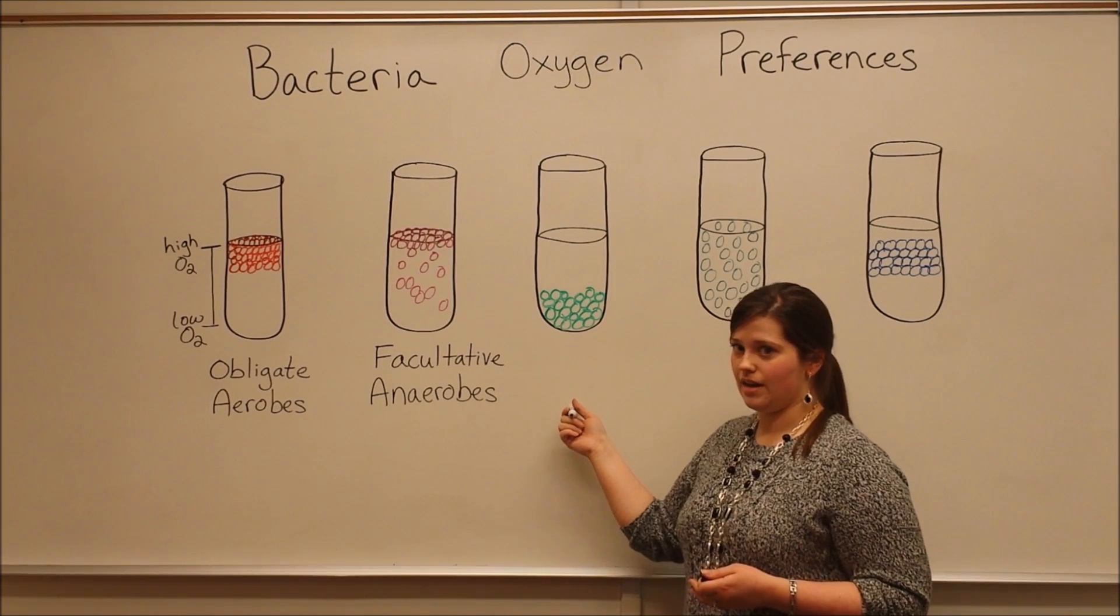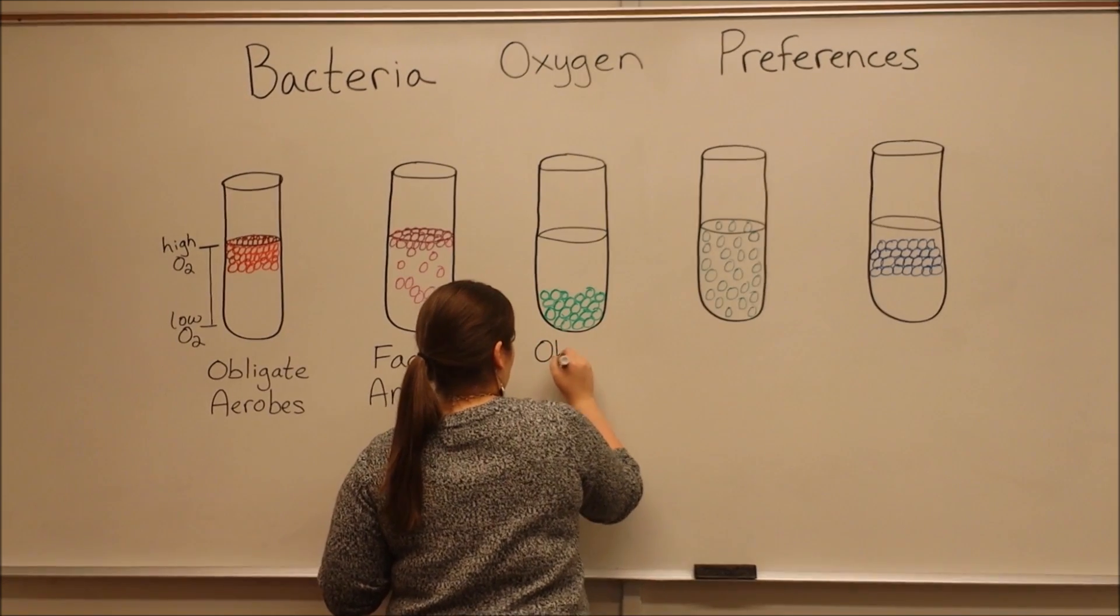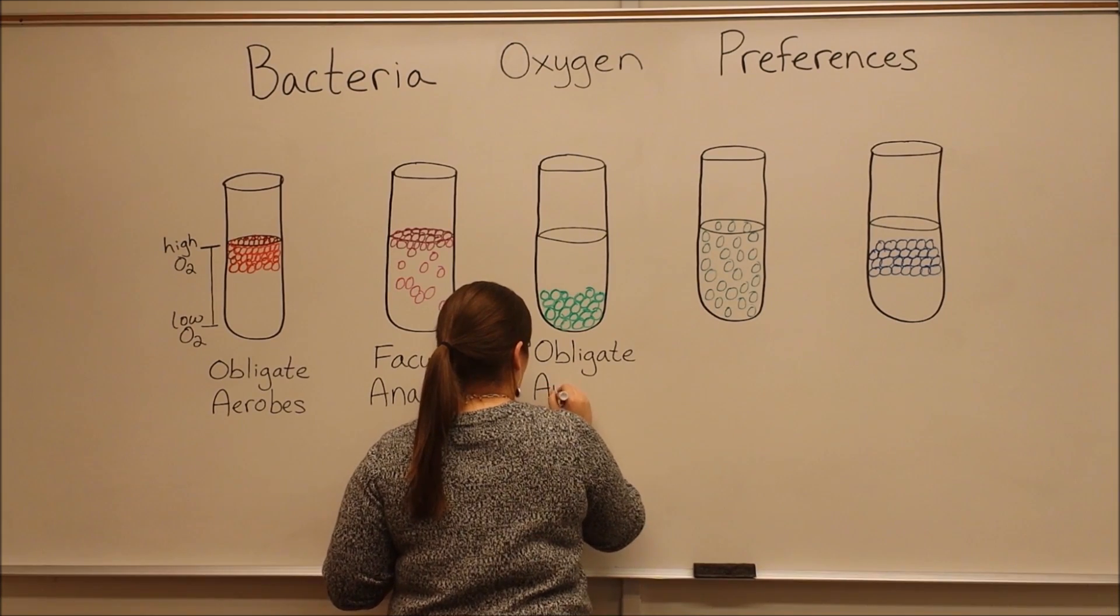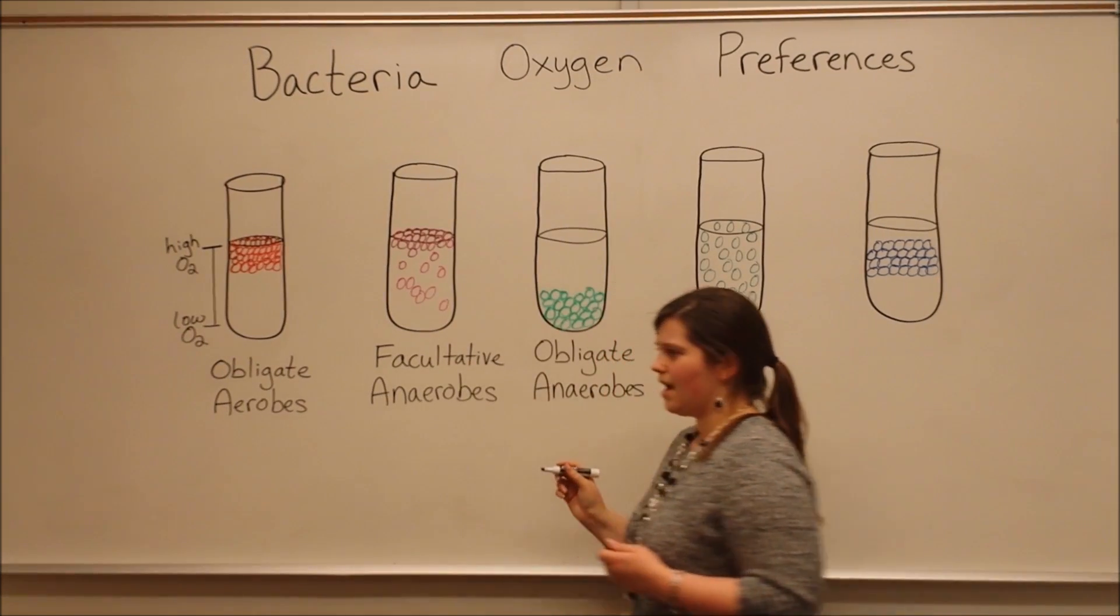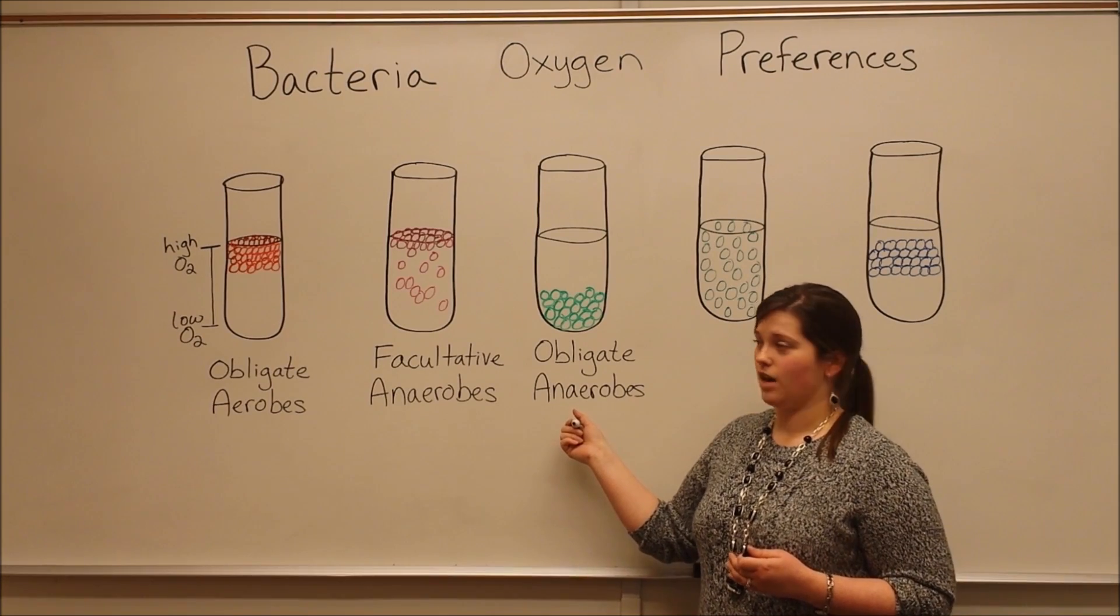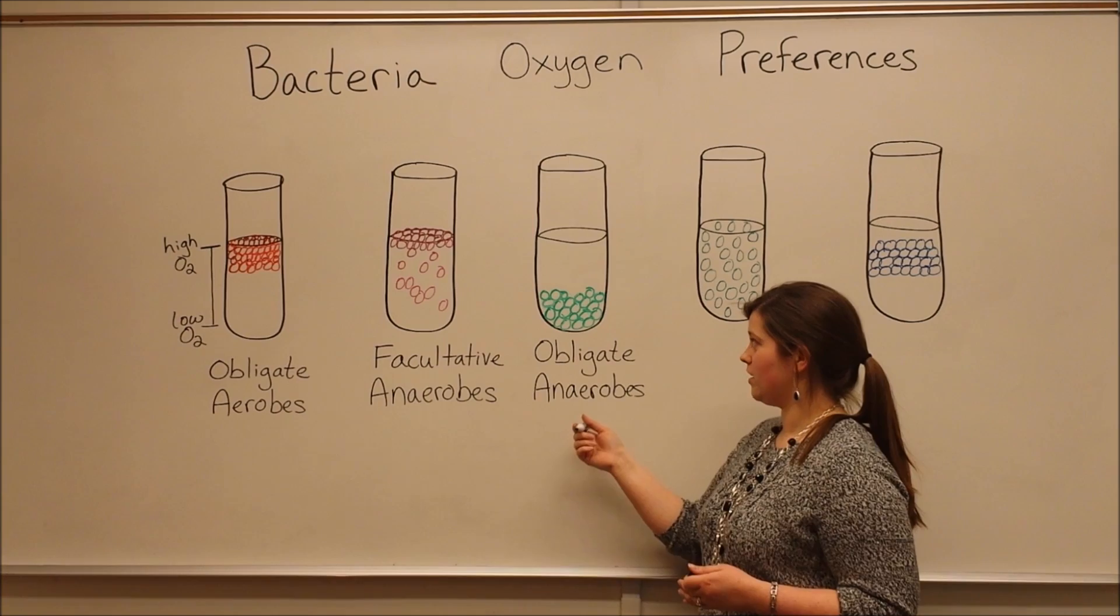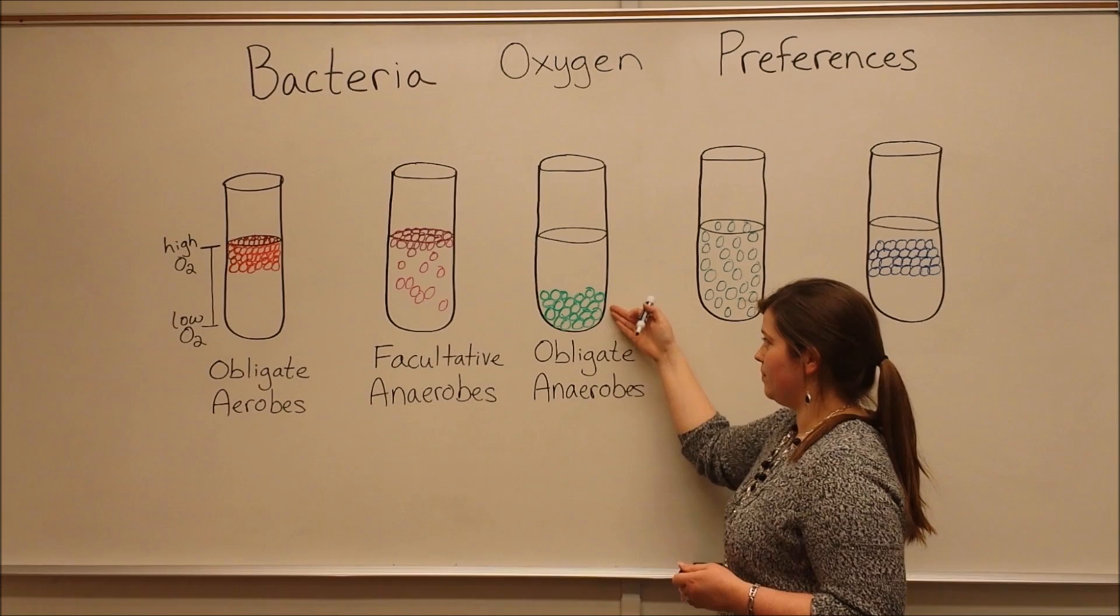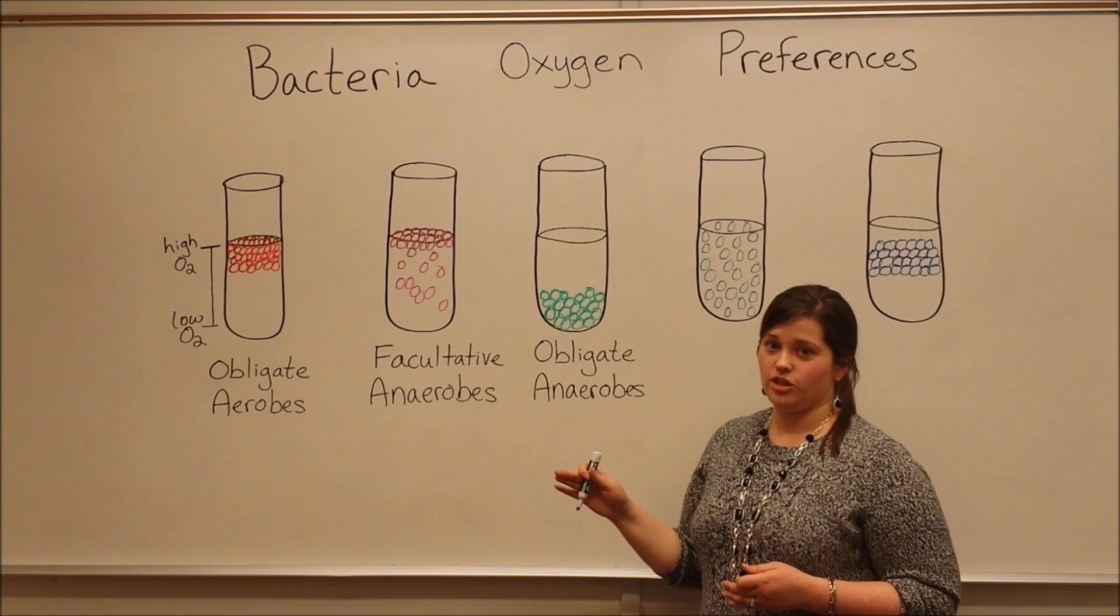We keep moving on. Now we get to the obligate anaerobes. As you might expect from their name, they are anaerobes because they don't require oxygen. And in fact, oxygen is toxic to these kinds of bacteria. That's why in the test tube, we see that these bacteria are only growing in the portion of the test tube where there is no oxygen present.